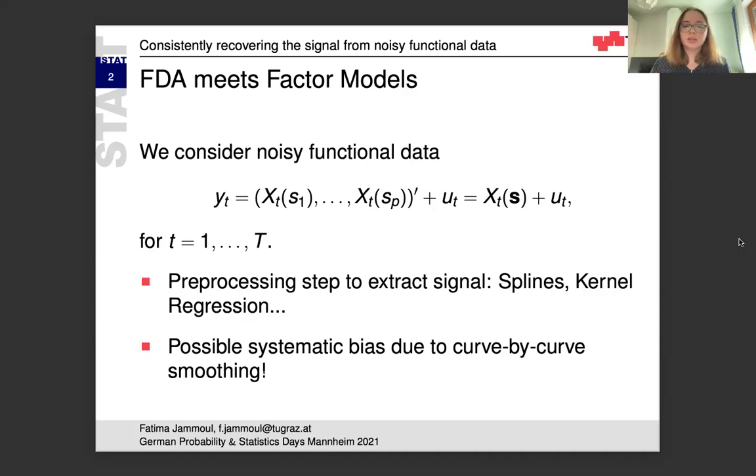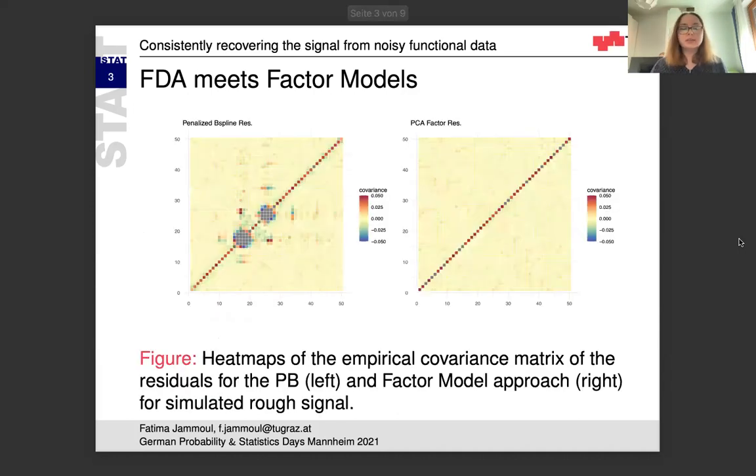And this, we believe, can cause some systematic bias. This comes from the curve-by-curve smoothing approach that leaves out information. Consider this particular setting. We have some sort of signal XT. The signal is a bit more rough. There are two bends in the actual signal, and we have perturbed it by some error.